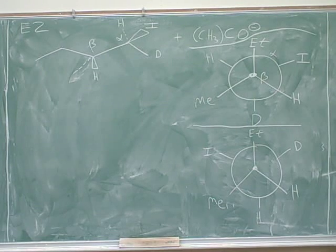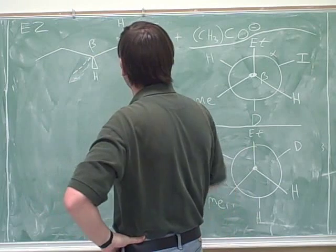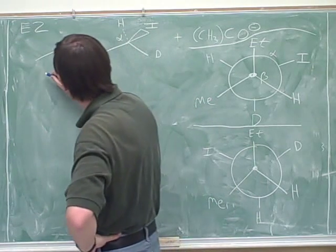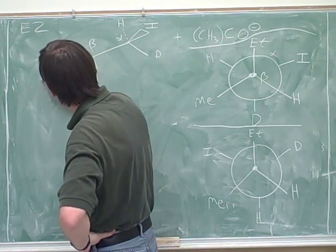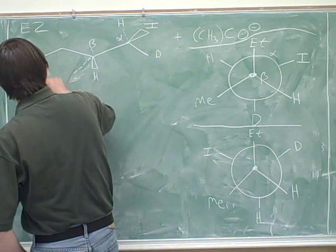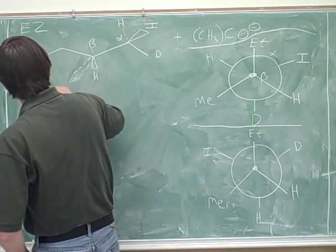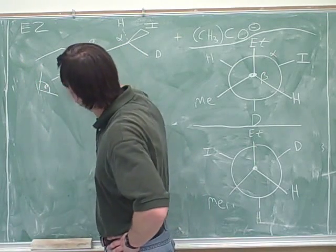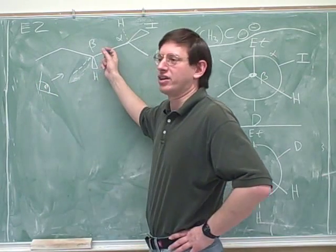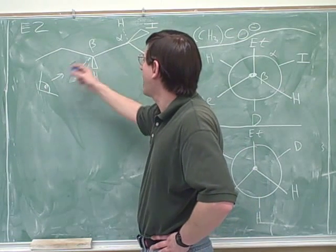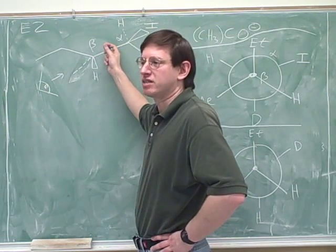Okay, looks like we picked that up pretty good. So you identified the alpha and the beta carbons — that was good. One suggestion I would make is, you didn't have trouble with the Newman projections, but as a precaution, it's good to actually draw in the line of sight. In this case the line of sight is really diagonal, so the safest thing is to draw the line of sight parallel to the alpha-beta bond.